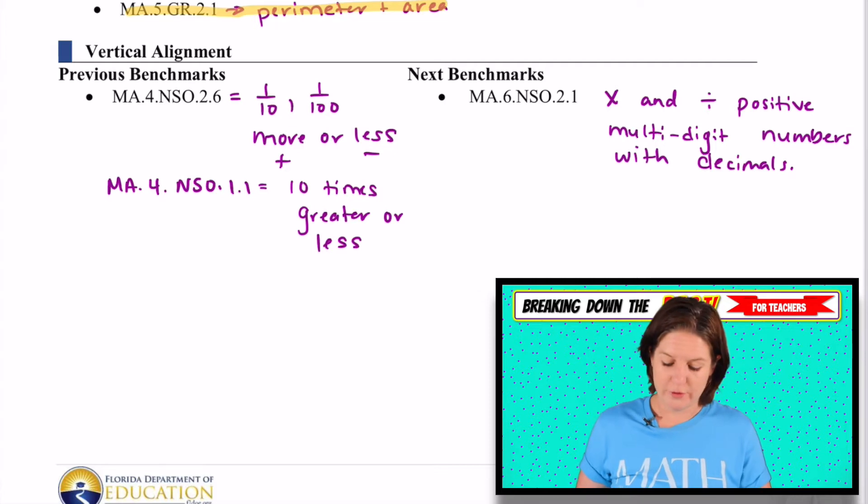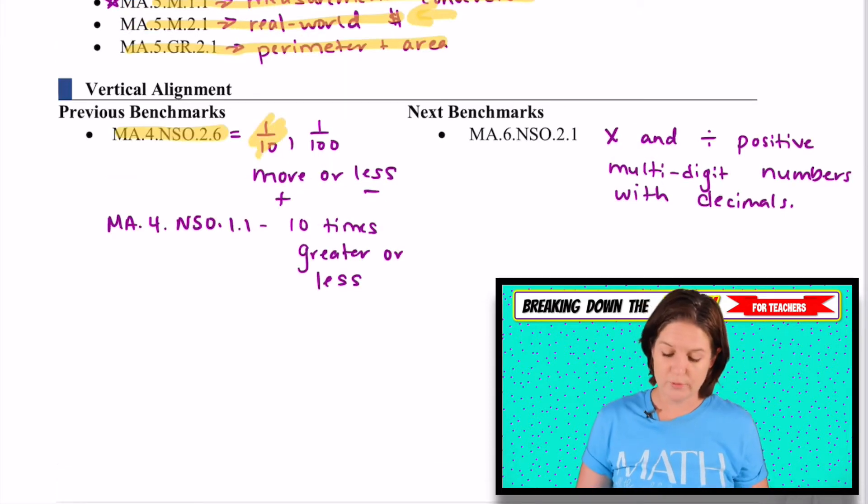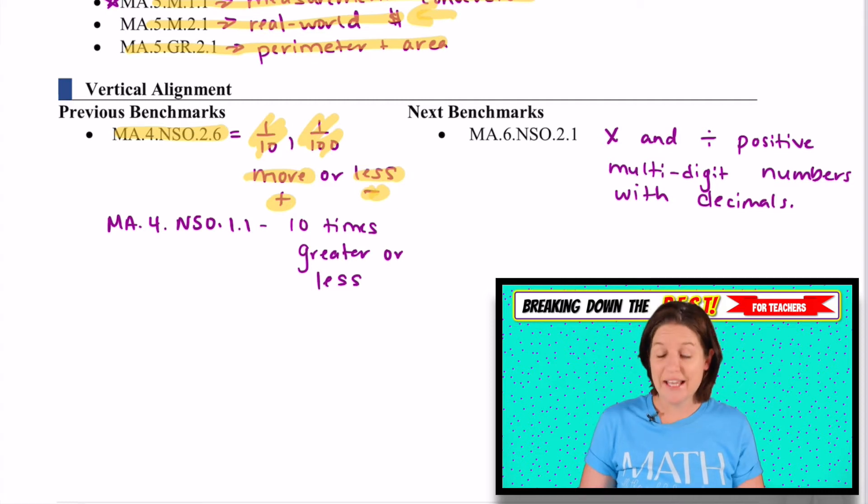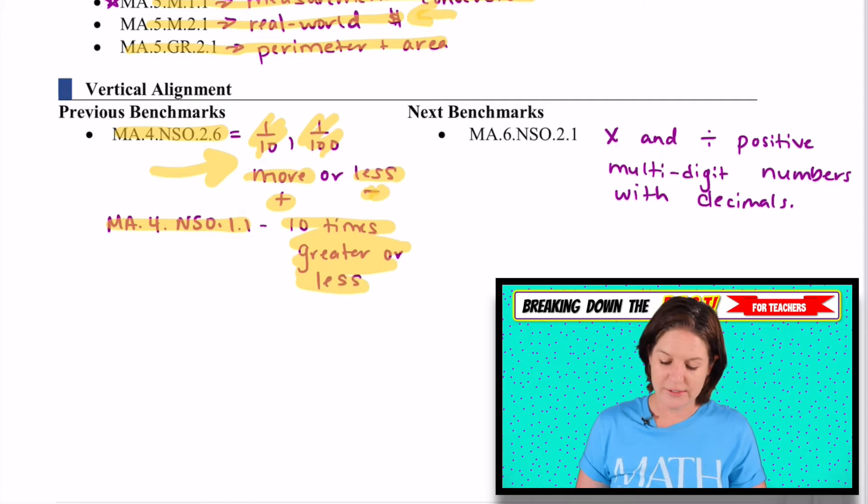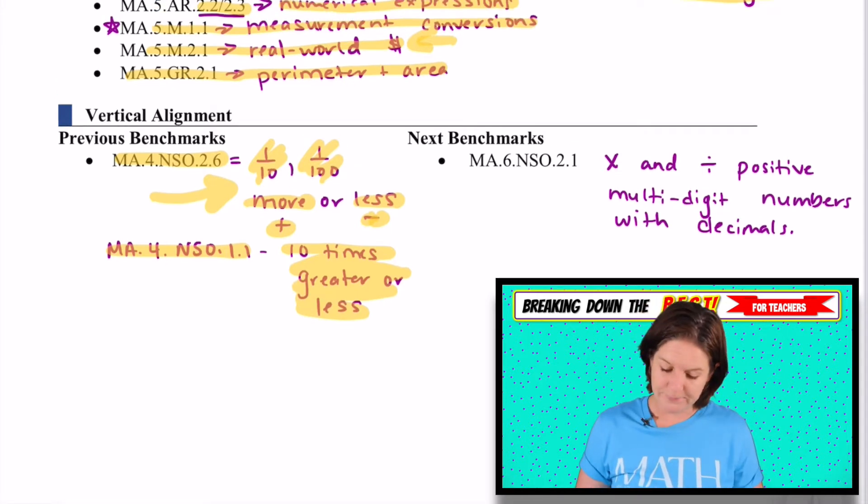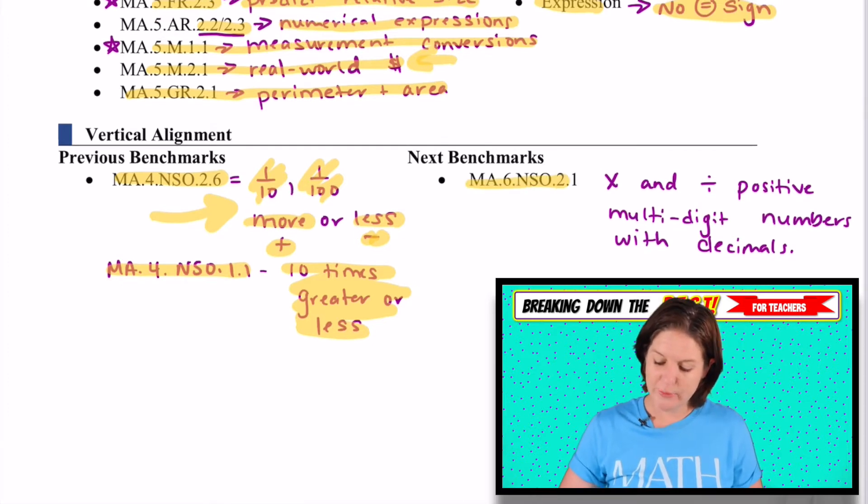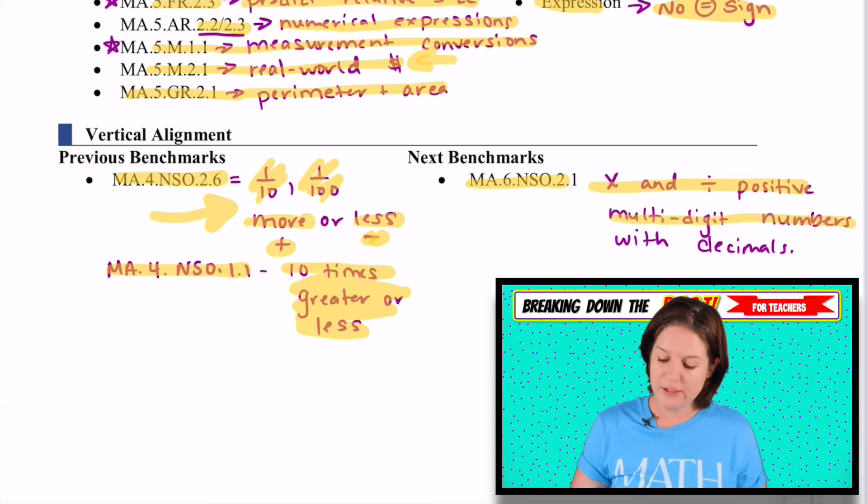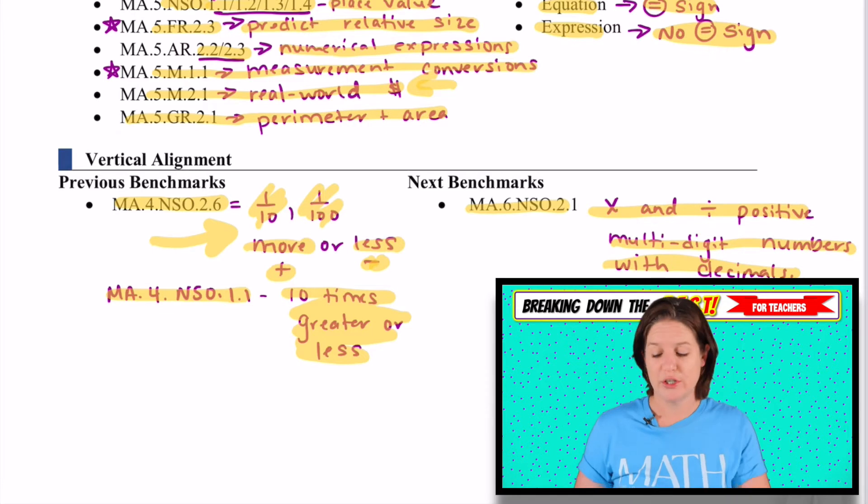Now where are they coming from in fourth grade? This is the standard that aligns vertically to this one. So in fourth grade, they do cover what one tenth or one hundredth more, so we're adding, or less is. However, as of creating this video, we are just starting to implement the best standard. So they might not be coming up with this, but just know that if you have access to the fourth grade videos as well, you can refer back down to the standard to show them that alignment if you want to. Also, I put in here that MA.4.NSO.1.1 is our 10 times greater or less standard, which will help in shifting our place values a little bit. And then in sixth grade, they will be expected to multiply and divide positive multi-digit numbers with decimals. So this will help them for next year with understanding.